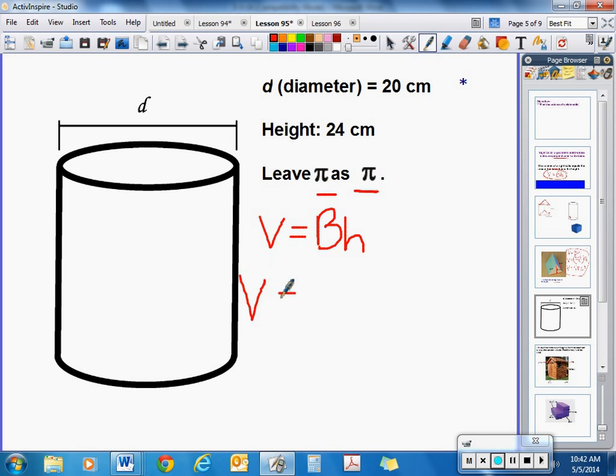If I'm going to find the area of a circle, I know the area of a circle is pi times r squared. Well, what is the radius here? If the diameter is 20, that means the radius is 10. So, I have pi r squared, which is pi times 10, times 10. That would be the area of the cylinder, pi r squared.